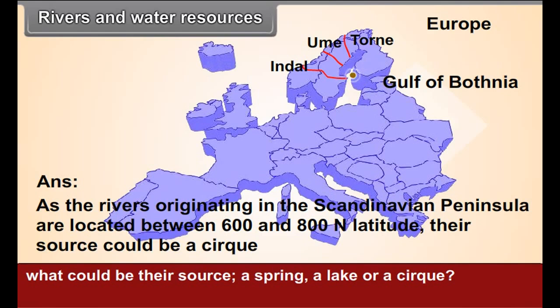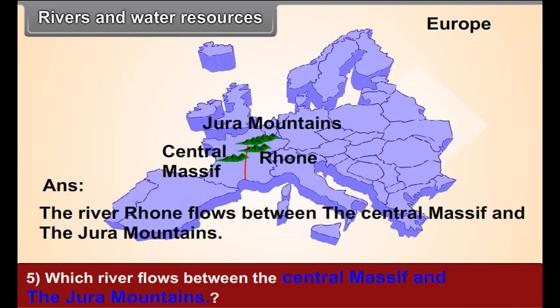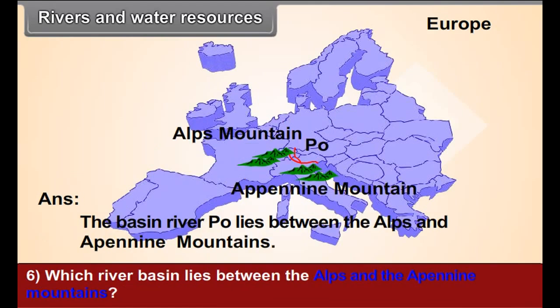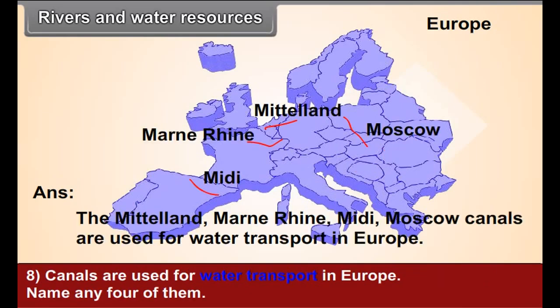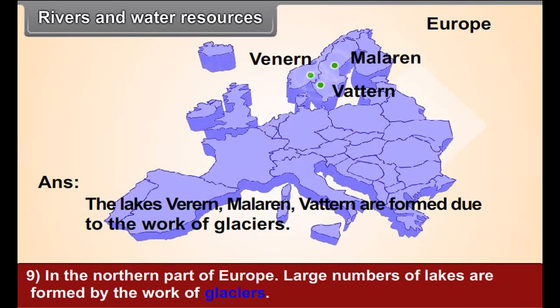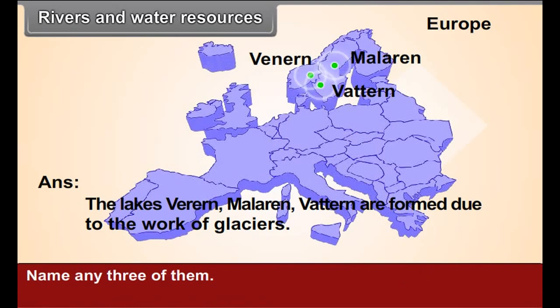A spring, a lake or a glacier? Which river flows between Central Massif and Jura Mountains? Which river basin lies between the Alps and the Apennine Mountains? Which river basin lies between the Volga Highlands and Ural Mountains? Canals are used for water transport in Europe — name any four of them. In the northern part of Europe, a large number of lakes are formed by the work of glaciers — name any three of them.